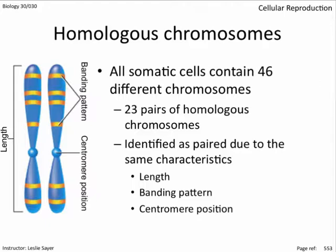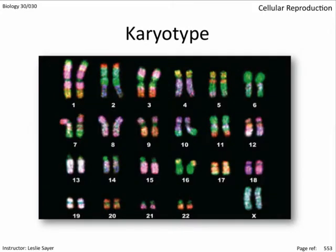Geneticists can pair up homologous chromosomes by visual indicators. Homologous chromosomes are identified as paired due to the same characteristics: length, banding pattern, and centromere position. A geneticist can take a sample of amniotic fluid from a pregnant woman and analyze the cells sloughed off from the fetus. Using computer-assisted microscopy, a geneticist can assess the chromosomal health of the fetus by performing a karyotype. The homologous chromosomes are paired and the banding patterns are color-enhanced for clarity, numbered 1 to 22 in descending order of size, with the sex chromosomes last.